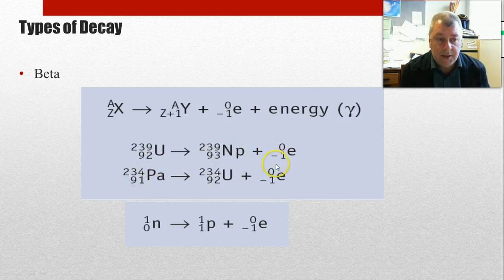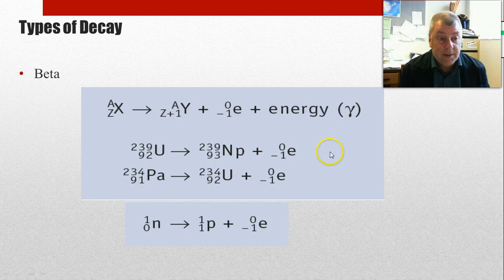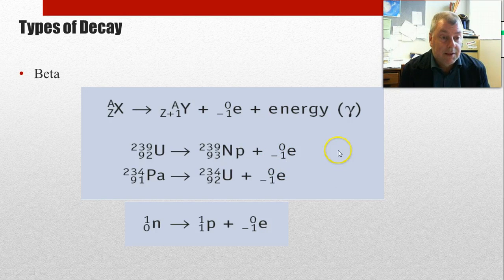Now what do we know about the beta particle? It's got a charge of minus one. It's an electron, so it doesn't weigh much. It's moving very fast. It's got fairly good penetrating power. And it does cause ionization because it's got some charge. A few other things, but that's the main things.